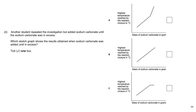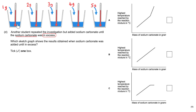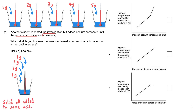Another student repeated the investigation by adding sodium carbonate until it was in excess. Unlike the first student, who started fresh each time with a new mass, this student took one volume of acid and kept adding more and more sodium carbonate to the same acid, measuring the highest temperature each time, until all the acid was gone and the sodium carbonate was in excess.